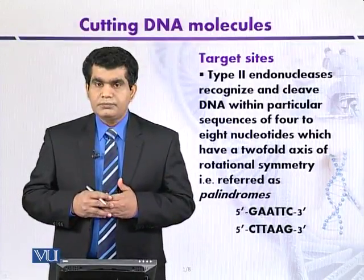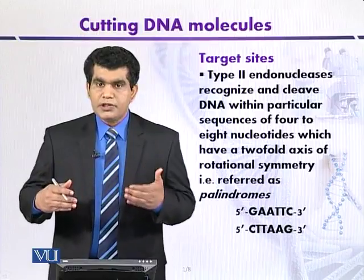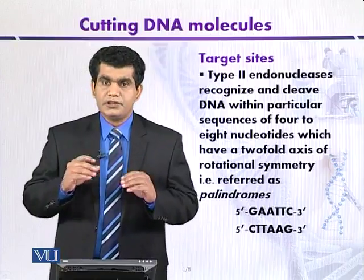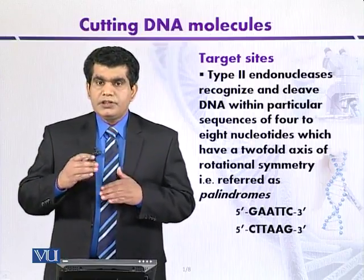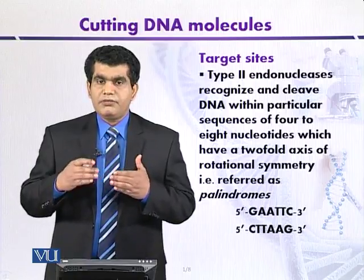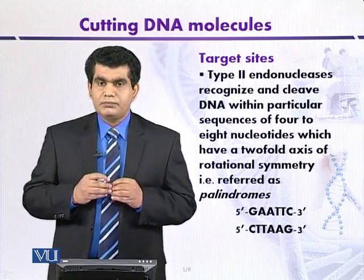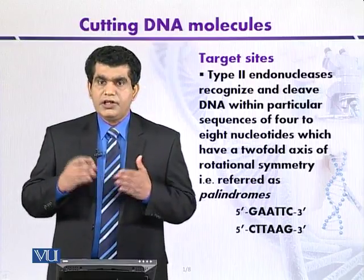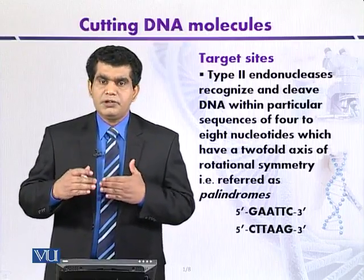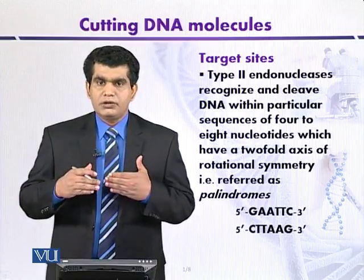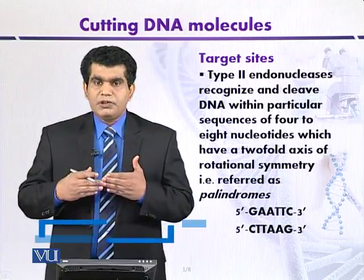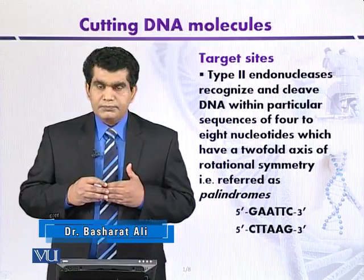Target sites. Type 2 restriction endonucleases can recognize a particular target site and cut within it. These Type 2 restriction enzymes can cut those recognition sites that have rotational symmetry. Simply, they recognize specific nucleotide sequences that are either 4, 3, or 6 base pairs long and have rotational symmetry or palindromic sequences.